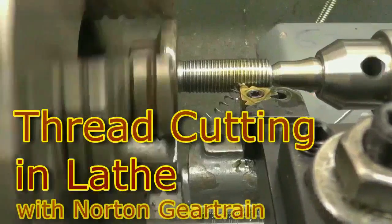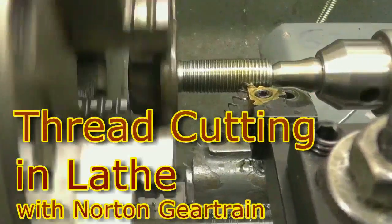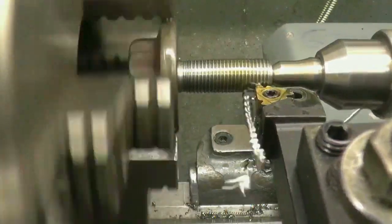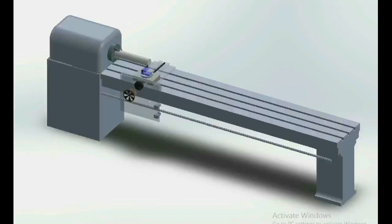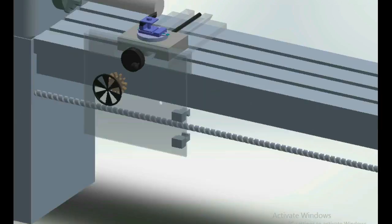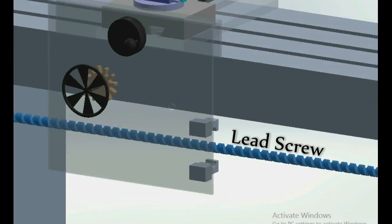In this video we'll discuss thread cutting operation in lathe. Thread cutting is a precise operation which requires the tool to move an exact distance per revolution of the spindle. For this a lead screw is used which acts as the master screw.